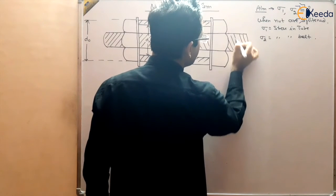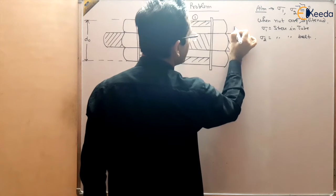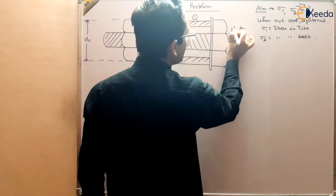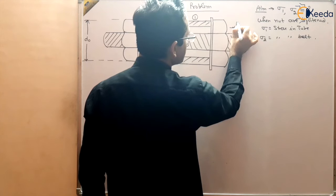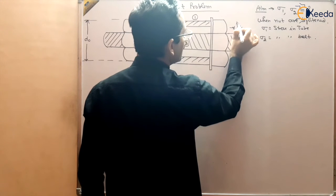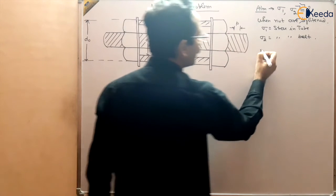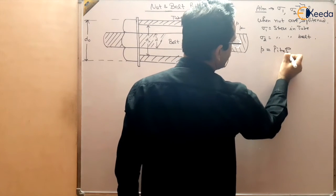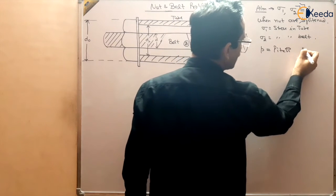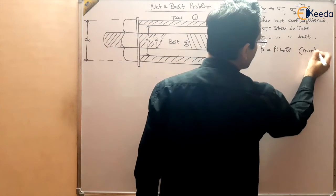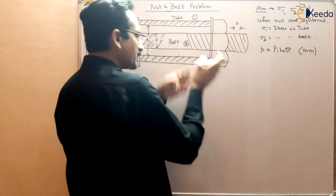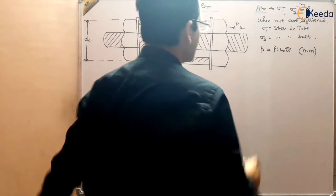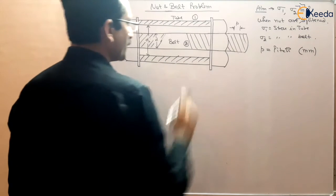There is a difference between two threads, and this difference between two threads is called the pitch of the bolt — pitch P. P is the pitch of the bolt. It may be in meters or centimeters, but generally it is used in millimeters because the distance is very small. So pitch of the threads is given in mm.